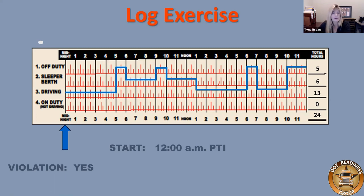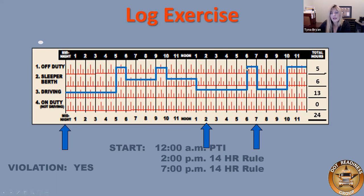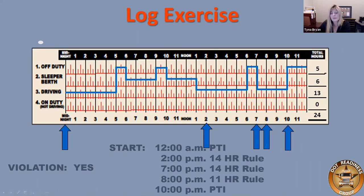No pre-trip inspection is better than falsifying, but neither is good. At 2 p.m. is a 14-hour rule violation — started at midnight, continued driving past the 14th hour. At 7 p.m., the 14-hour rule again, because they changed duty status and continued to drive. At 8 p.m., the 11-hour rule — at 11 hours of driving, they can't drive anymore. At 10 p.m., another post-trip inspection violation. That's five violations on one log page.